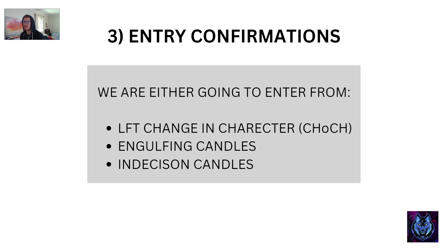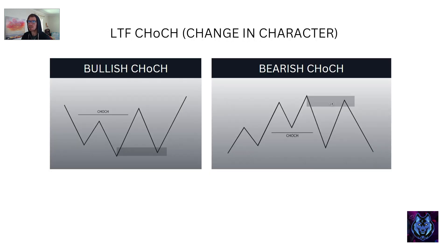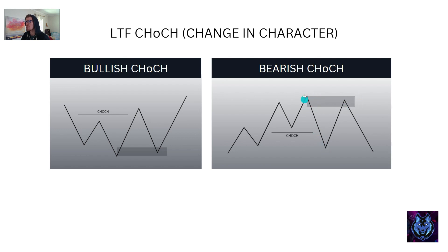Number three: entry confirmations. We're either going to enter from a lower time frame change in character, engulfing candles, or indecision candles. For a lower time frame change in character: price is going down creating lower lows, and then there's a lower high. As soon as it breaks above the lower high and creates a higher high, the change of character is formed. In order to break this structure there's momentum — it leaves behind an order block, we mark it out on the lower time frame, and this becomes our entry zone. Same on a bearish change of character: price is going up — higher high, higher low — then we have our first lower low. It breaks structure, we get a change in character, it breaks the structure and leaves behind a nice lower time frame order block.